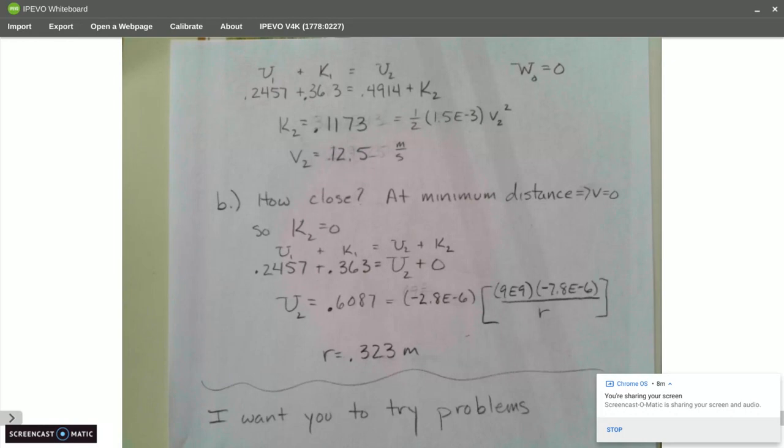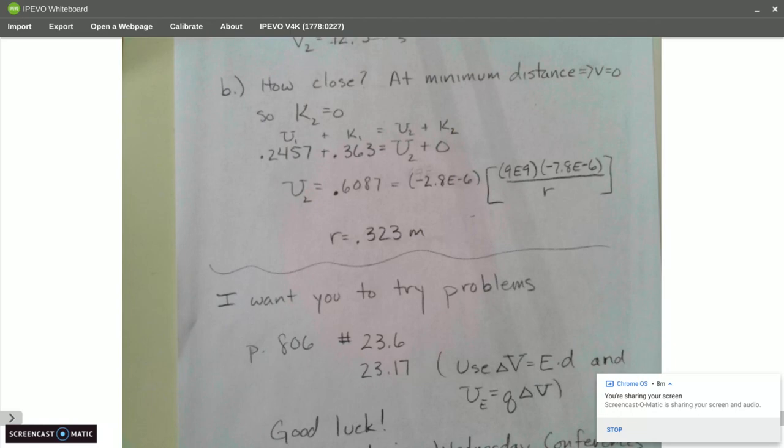Question B says, how close does Q1 get to Q2? So note at a minimum distance, the velocity is defined as zero. That's the first derivative test. So K2 is equal to zero. So if I go back into my U1 plus K1 is equal to U2 plus K2, I can solve for U2. I get 0.6087. And I set that equal to my equation that I used before. And I'm going to solve for R. And that tells me the closest they can get is 0.323 meters. After that, it would turn around and become repelled by the charge.